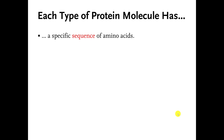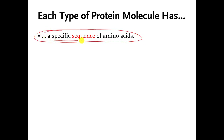Welcome back, everybody. This is an extension of the previous video. In the previous video, we ended by talking about how different protein molecules have a specific sequence — their own special order of connecting the amino acids to each other. And the order that you connect them in, or the sequence that they're connected in, controls what type of job the protein molecule does.